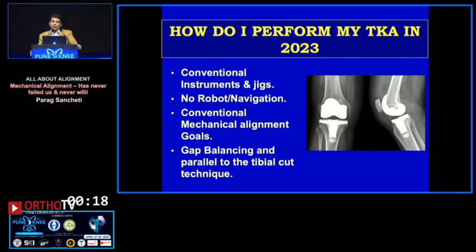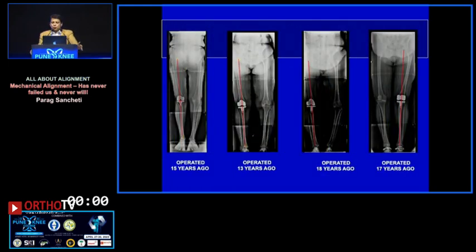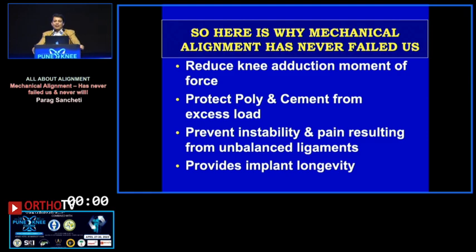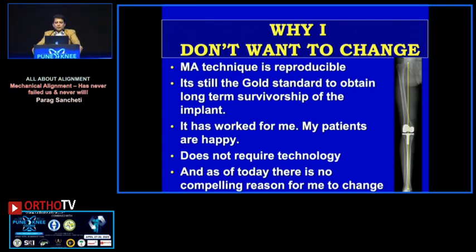As of 2023, I perform my TKAs using conventional technique — no robot, no navigation — even though Pune is the robotic capital of India with 15-plus robots in my city. I haven't used them, though I have tried each one. I believe mechanical alignment is the gold standard, and my long-term results bear that out, with patients doing well at more than 15 years. Mechanical alignment reduces erector momentum, increases the life of the poly and cement, prevents instability and pain, and delivers good longevity. My numbers are going up every year, so I don't find any compelling reason to change.